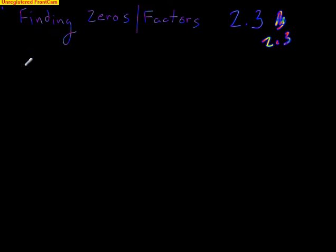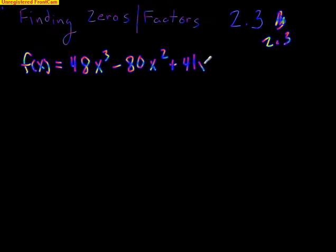All right, here's the idea. I'm going to give you a function. For example, here is the function f(x) equals, oh, it's kind of a weird one here, 48x³ - 80x² + 41x - 6. Now this is a cubic, which means it has three, two, one zeros.